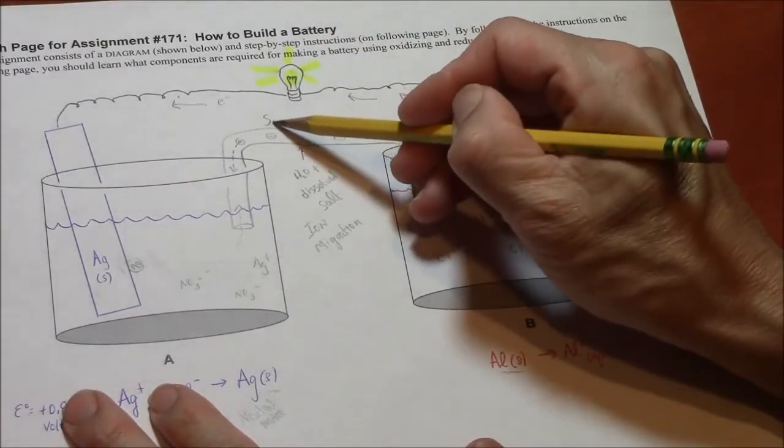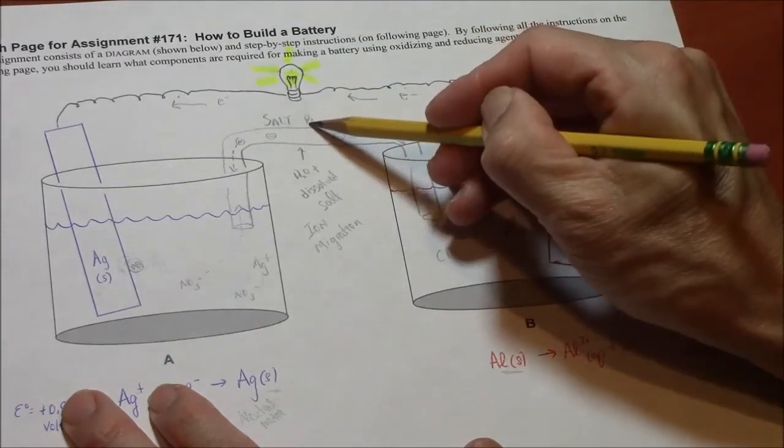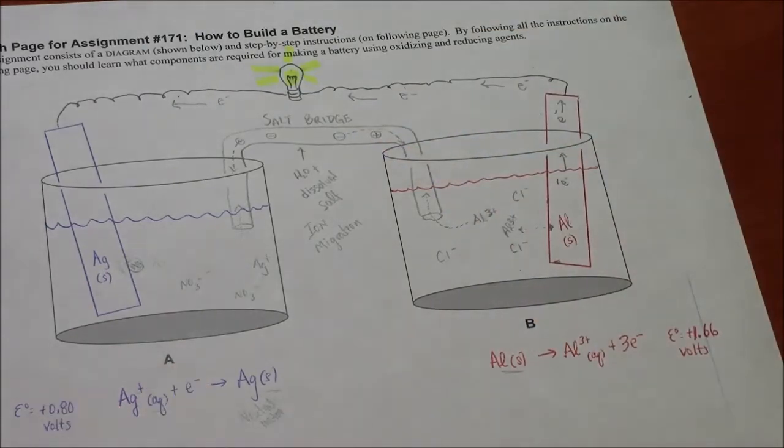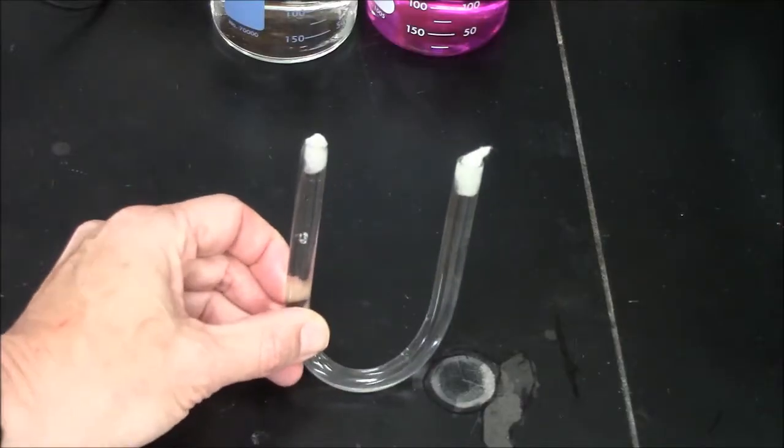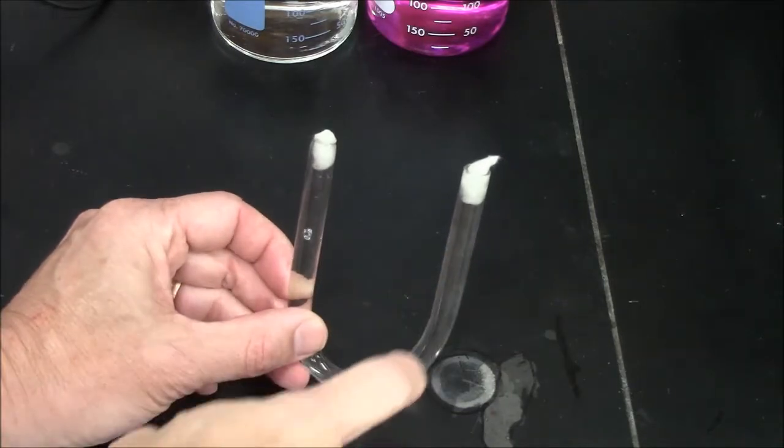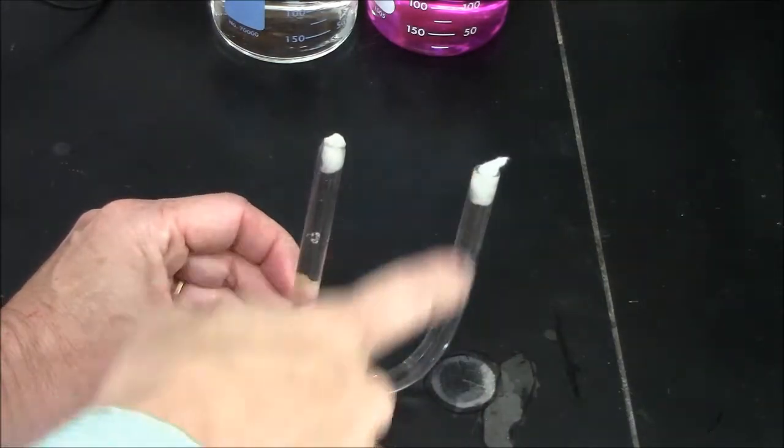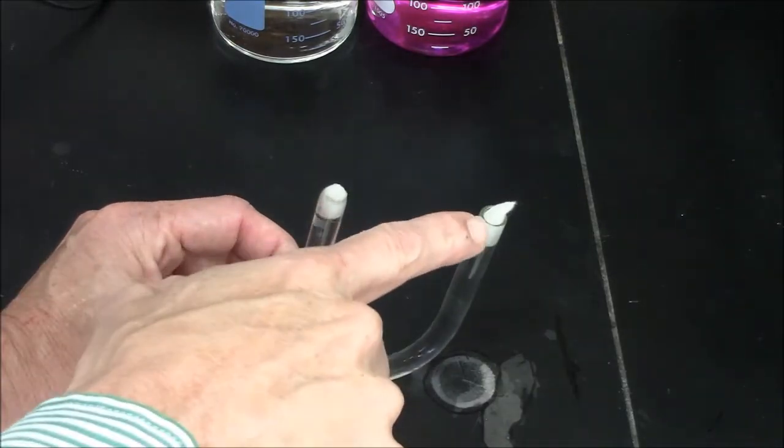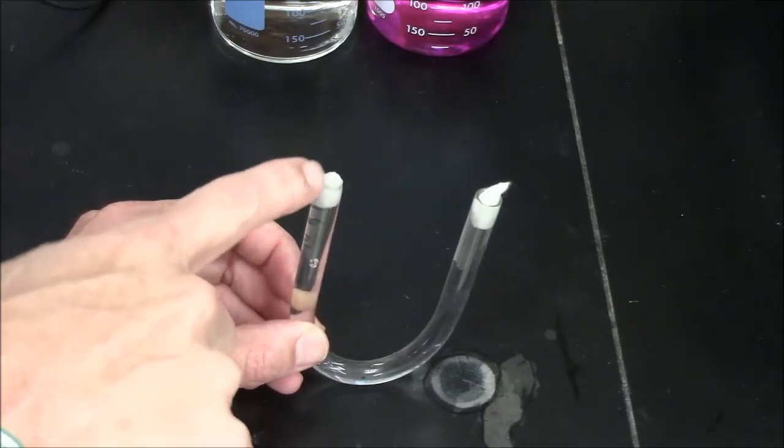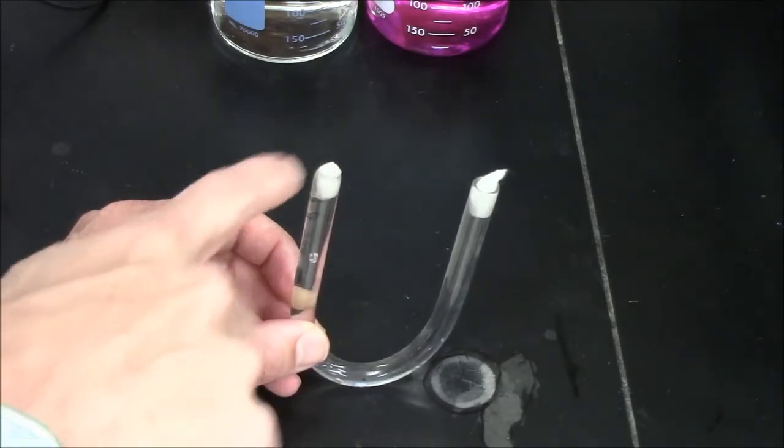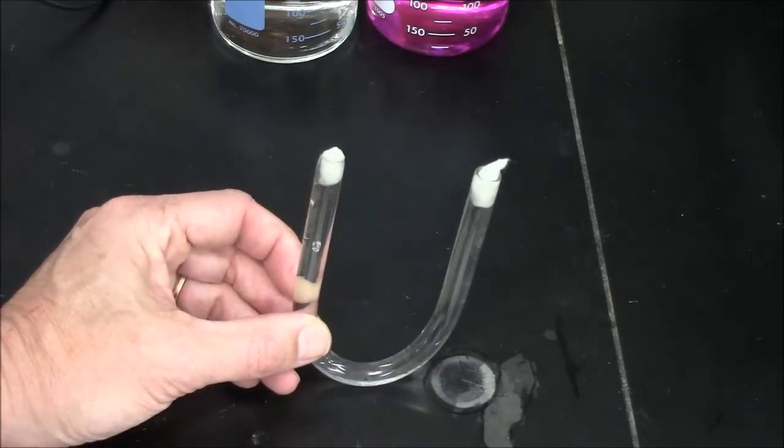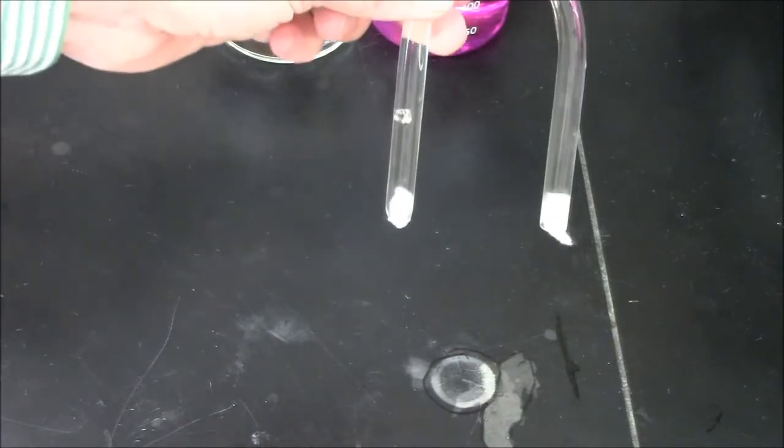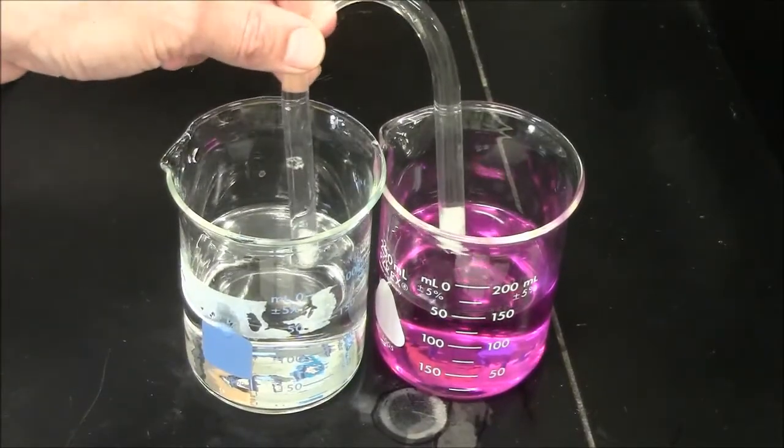If you haven't already done so, please label the salt bridge, like so. Here's a salt bridge. It's glass. It's filled with a solution of salt. It has these cottons on the end. Ions can easily migrate through the fibers of cotton, so this is not a barrier. It simply keeps the liquid from falling out when I turn it upside down.